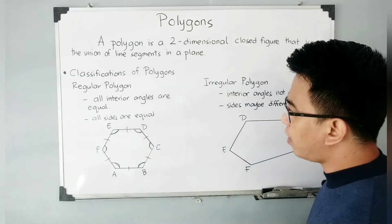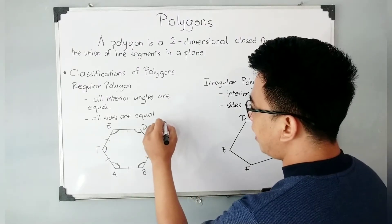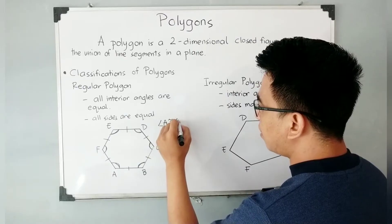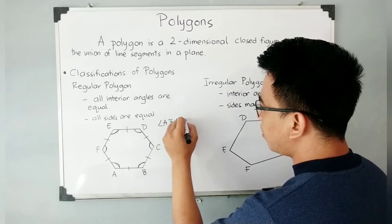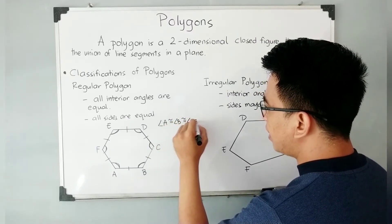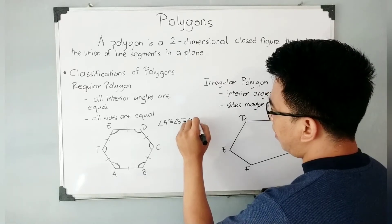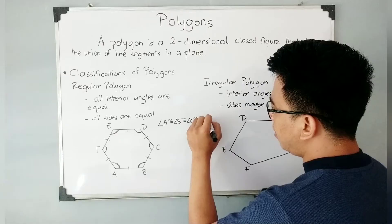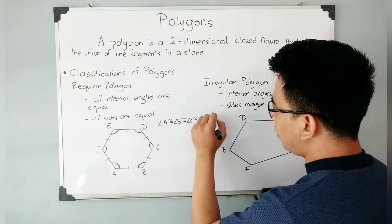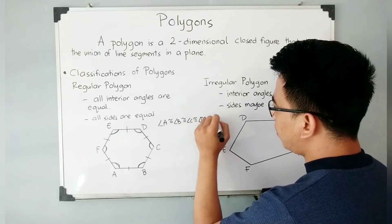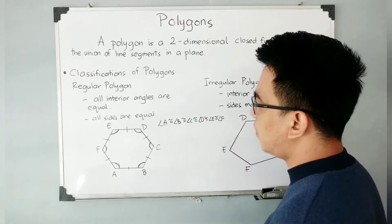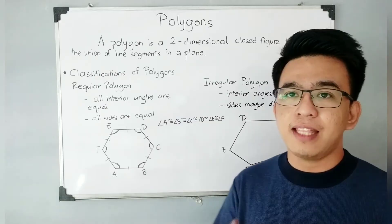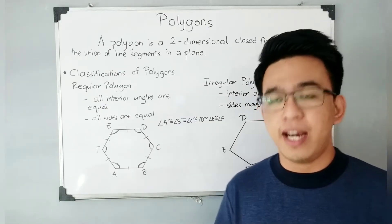If they are equal, we can say that angle A is congruent or equal to angle B, is congruent to angle C, is congruent to angle D, and this one is also congruent to angle E, and also congruent to angle F. So in other words, if you have a regular polygon, all the interior angles are equal.